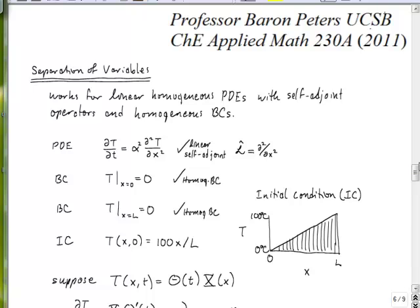Okay, so we have been discussing self-adjoint operators and Hermitian operators and how the boundary conditions give rise to orthogonal eigenfunctions with real eigenvalues. And today what we will do is separation of variables. We'll start with a very simple example. So this method works for linear homogeneous partial differential equations that have self-adjoint operators within them and that have homogeneous boundary conditions. So those are all three requirements for having separation of variables work.